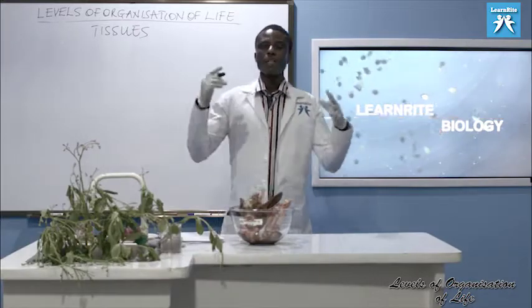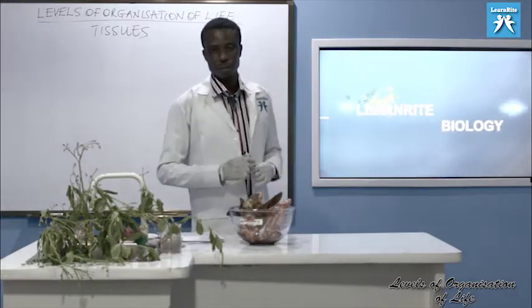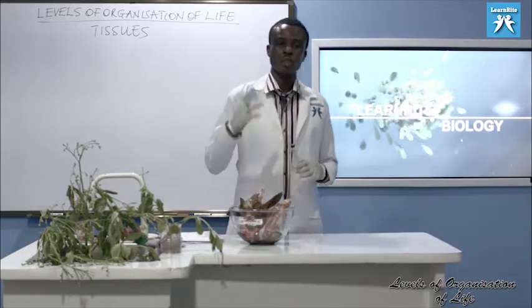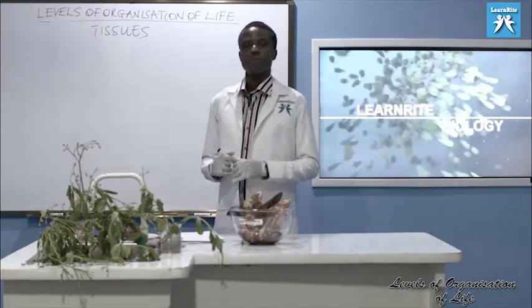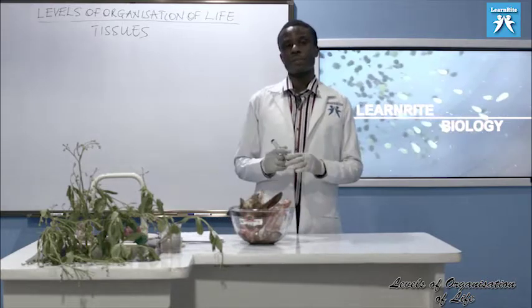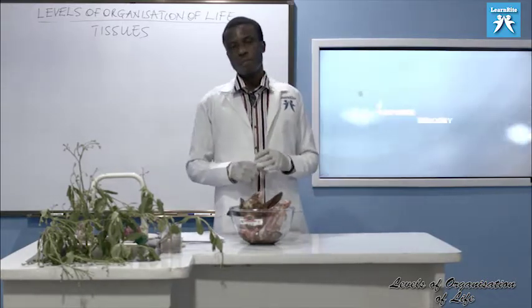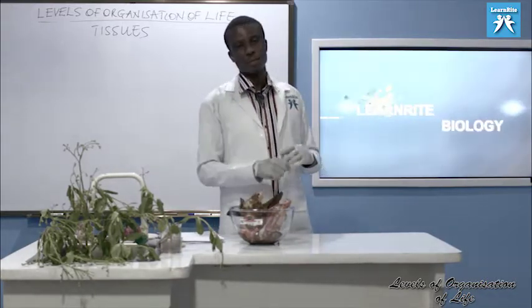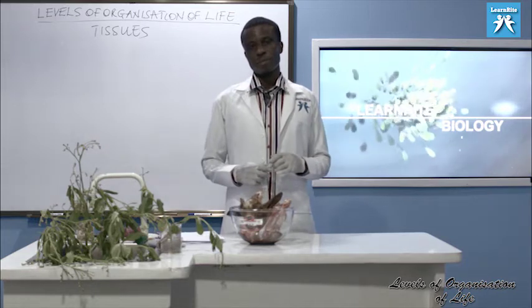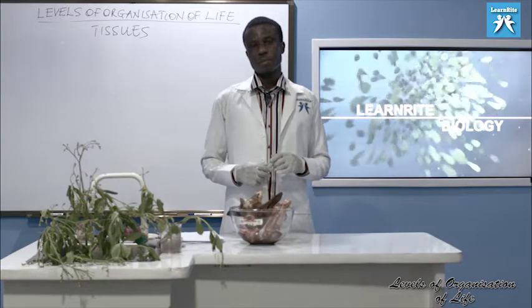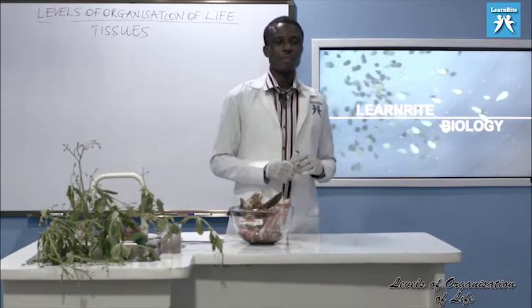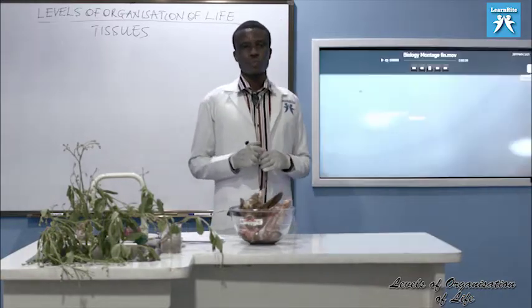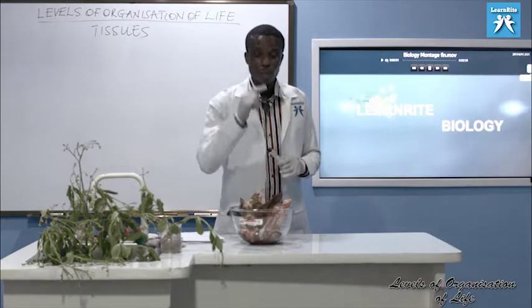Now let's look at tissues in animals, tissues in mammals. We have different examples. Blood is a tissue, made out of blood cells. Then we have lymph — it is also a tissue. Even bone is a tissue.